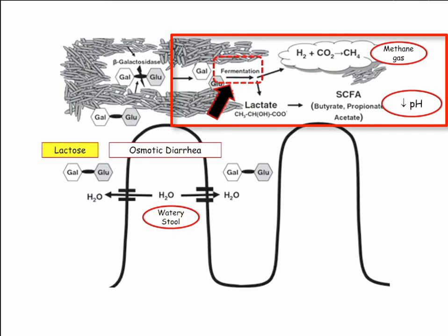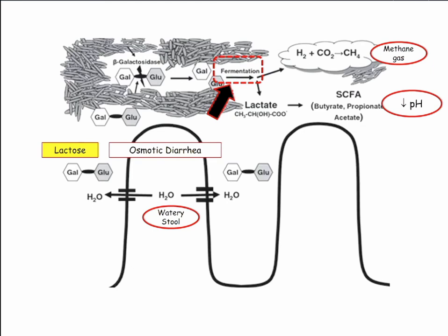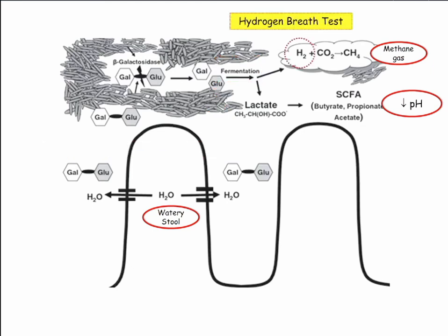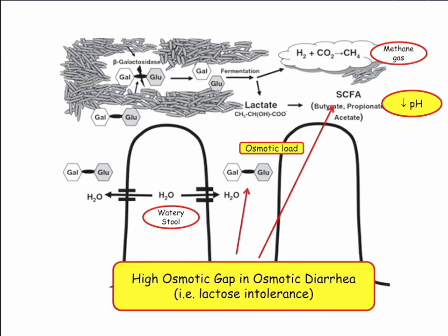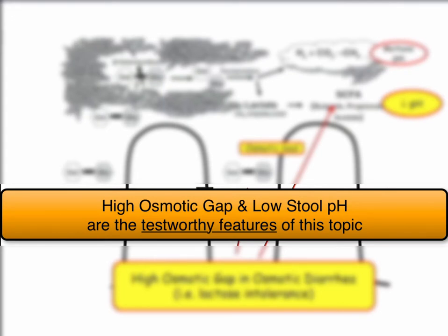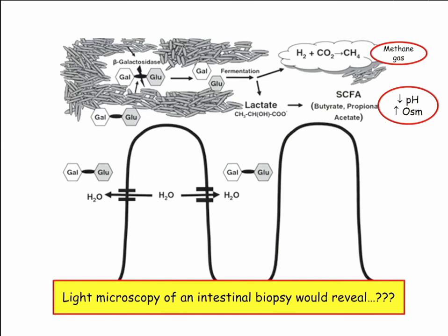The lactose converted to short-chain fatty acids lowers the pH, so you wind up with diarrhea and lactose intolerance — two reasons. You have the sugars causing an osmotic load and the short-chain fatty acids causing an osmotic load. There's your high osmotic gap in osmotic diarrhea. The stool has low pH. If they give you low pH or a high osmotic gap, it's lactose intolerance — it's really the only thing that does this. Light microscopy is normal. On intestinal biopsy, you'd hope they ask a lactose intolerance question — the microscopy shows nothing abnormal.